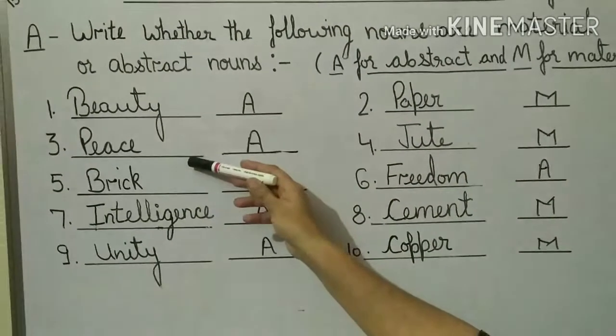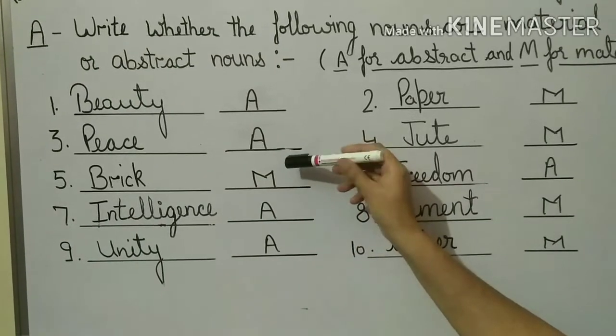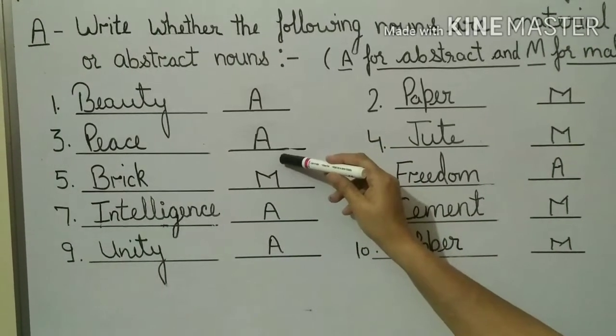Another example is peace. Peace we can only feel. We can see a peaceful person but peace only we can feel. So that is abstract noun.